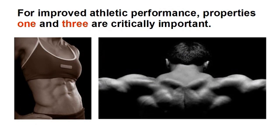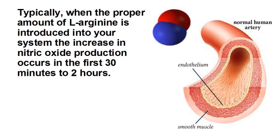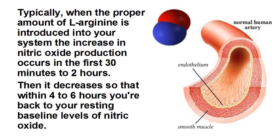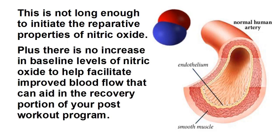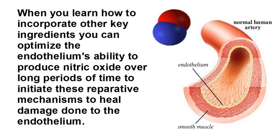For improved athletic performance, properties 1 and 3 are critically important. Weightlifters and other athletes who use the amino acid L-arginine in their workout programs only derive the short-lived improved blood flow, because of how L-arginine is metabolically processed in their system. Typically, when the proper amount of L-arginine is introduced into your system, the increase in nitric oxide production occurs in the first 30 minutes to 2 hours. Then it decreases so that within 4 to 6 hours, you're back to your resting baseline levels of nitric oxide.